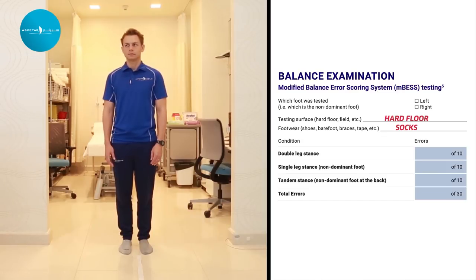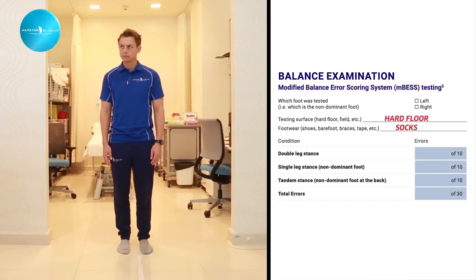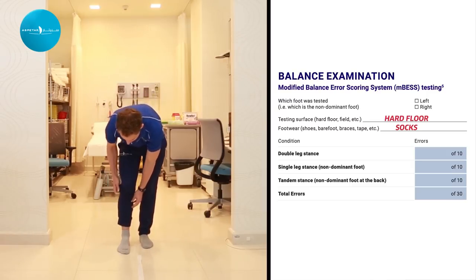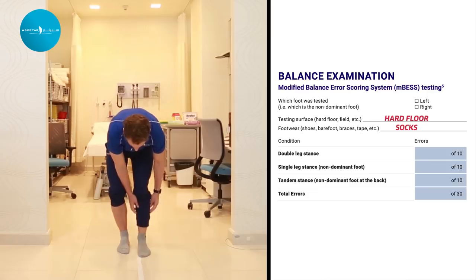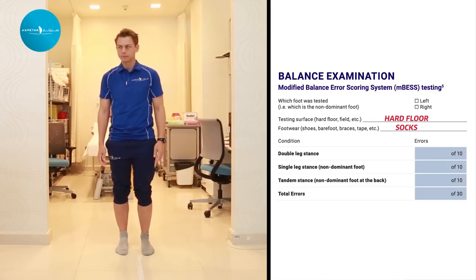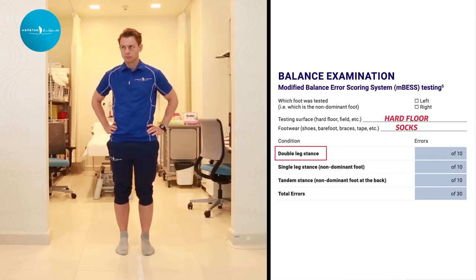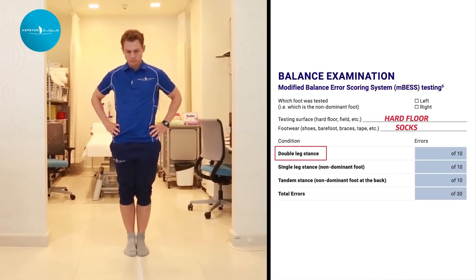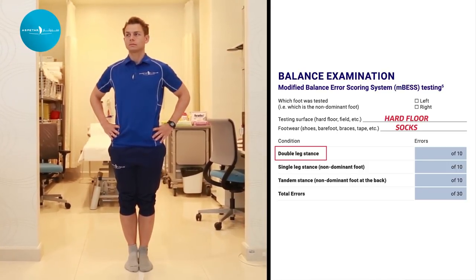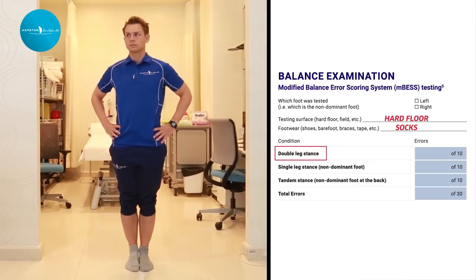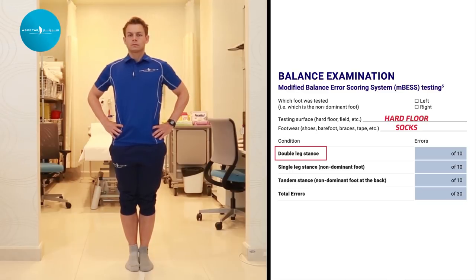The athlete removes his shoes and rolls his pants above the ankle. The first balance test is the double leg stance — standing with feet together, hands on hips, and eyes closed. The athlete tries to maintain stability in that position for 20 seconds. The examiner counts the number of times the athlete moves out of position. Timing starts when the athlete is set and has closed his eyes.